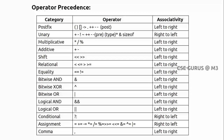The operator precedence table shows: if you take two operators, the one on top has higher priority. Logical AND is higher priority than logical OR, so in any expression with both AND and OR, always perform AND first. Associativity (left to right) applies when operators are at the same level.